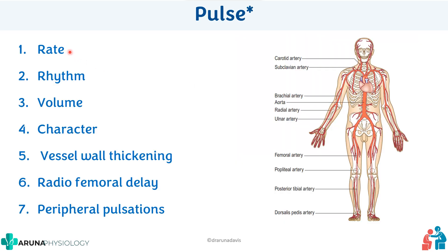There are different characteristics you have to mention about pulse: rate, rhythm, volume, character, vessel wall thickening, radio-femoral delay, and peripheral pulsations. We will see each one by one.